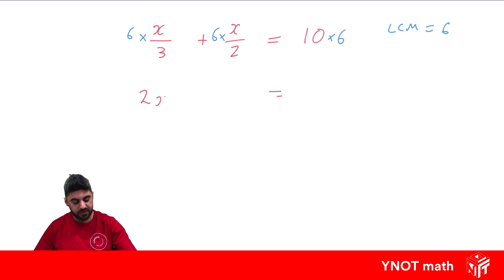So it becomes 2 times x, which is 2x. Over here, we've got 6 divided by 2, which is 3. So we're left with 3 times x, which is 3x. And we've got 10 times 6, which is 60.